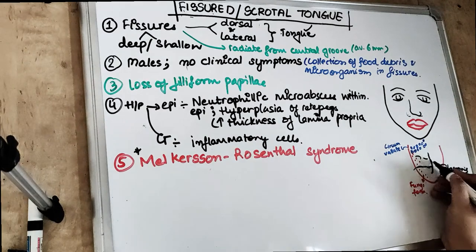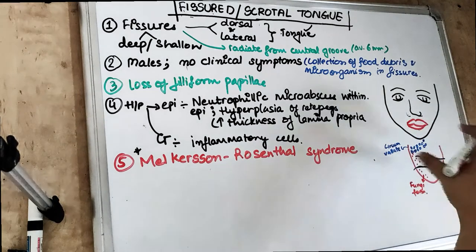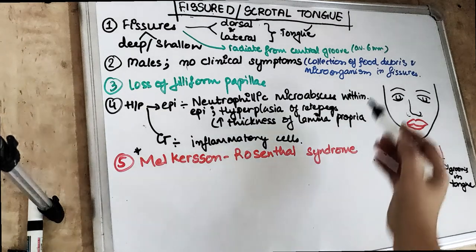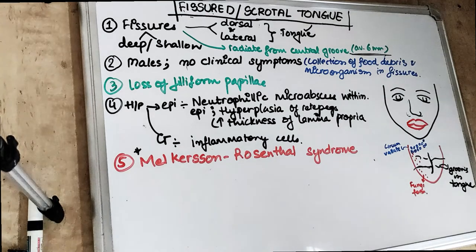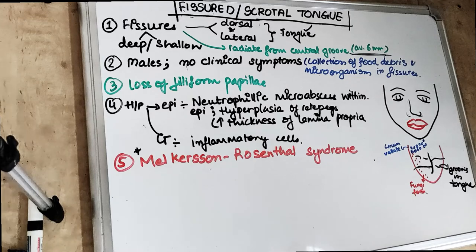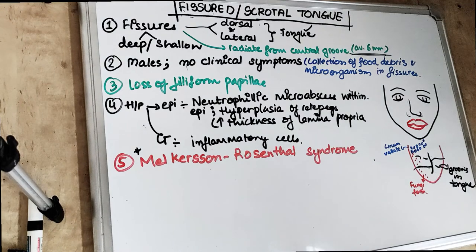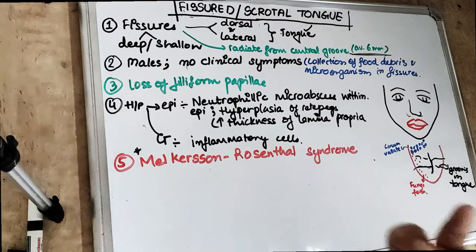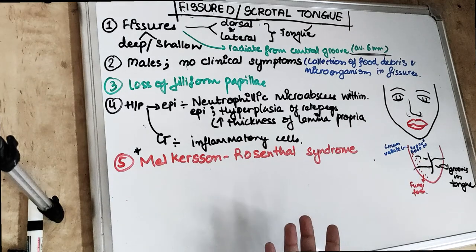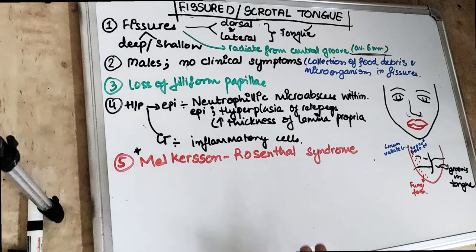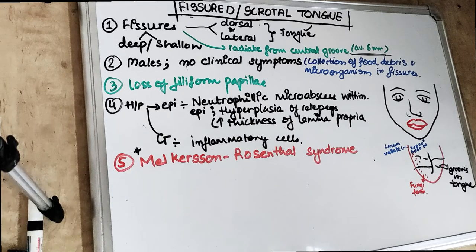The depth of these fissures can be up to 6 millimeters. There is no predilection for sex, though it is usually seen in males. There are no clinical symptoms — they are usually painless — but because of the fissures or grooves present, food can accumulate in them, leading to growth of microorganisms, which can cause discomfort to the patient.